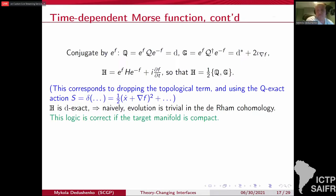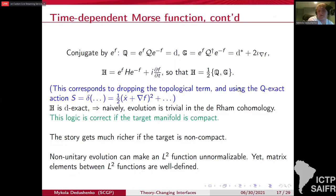But because H is D exact, maybe it seems like the evolution is trivial in the cohomology. The Hamiltonian is exact and that's correct if the target manifold is compact. But if your target is non-compact, things might happen. And in particular, as you will see, an L^2 function, for example, can become unnormalizable. Yet the overlap with a normalizable function is well defined. So the matrix elements between normalizable states of this interface are well defined and that's all we need.